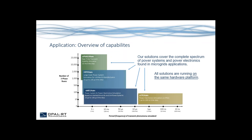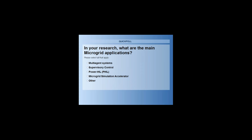We will now present the first poll. We have two polls during this presentation and would like your input on the following question: In your research, what are the main microgrid applications? This is a multiple-choice question — you can select more than one from multi-agent systems, supervisory control, power hardware-in-the-loop, microgrid simulation accelerator, or other. Feel free to use the chat if you select 'other' to list your main applications.